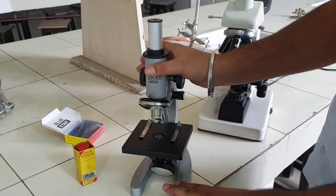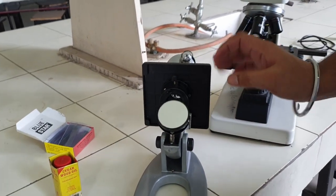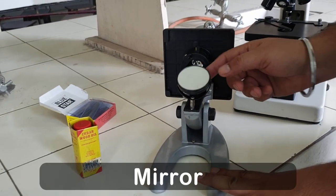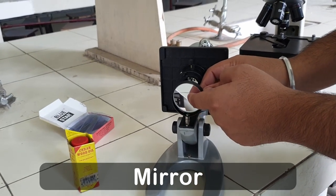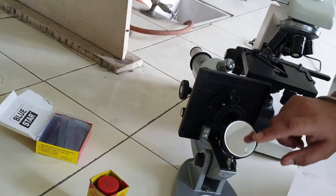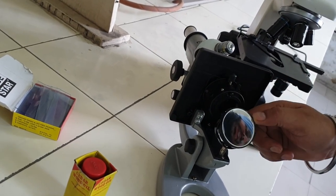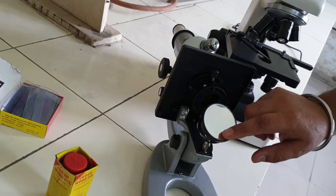Now let's see what parts are in it. This is the mirror. It has two sides. This is a concave mirror and this is a flat mirror. If we use a little light, then we use a flat surface. If we need more light, then we use a concave surface.